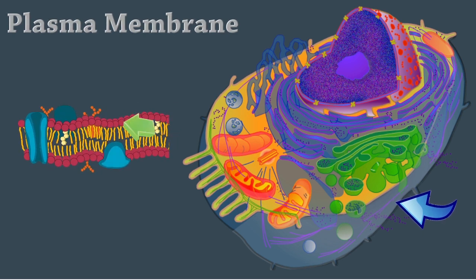The plasma membrane encloses the cell. It's made from a bilayer of phospholipids, cholesterol, and proteins, and it acts as a semipermeable barrier. It creates the cell's internal and external environments.